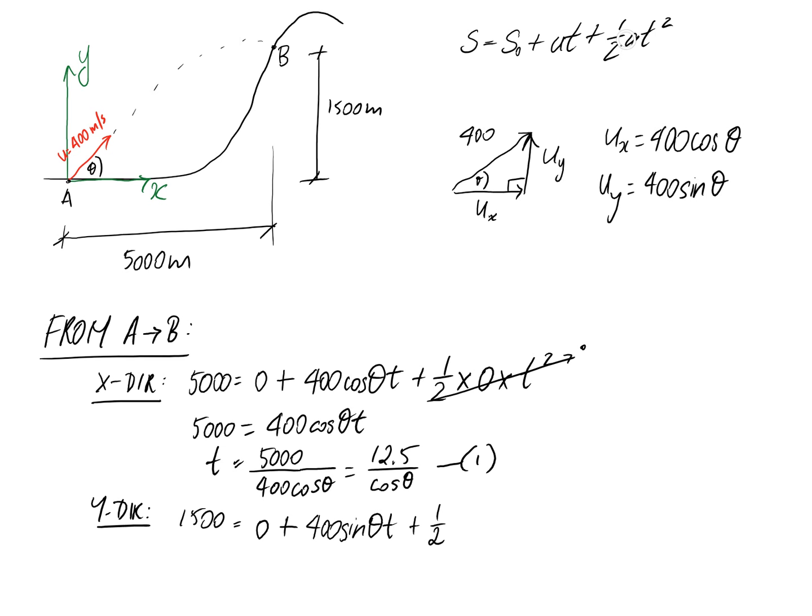This time for our acceleration, we're going to be considering gravity. It's going to be trying to pull our object downwards, so it's negative, and 9.8 meters per second squared is gravity. So that becomes our second equation. It's got the same two unknowns of theta and T, so we should be able to solve for a solution.